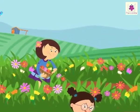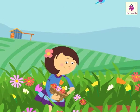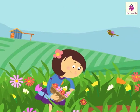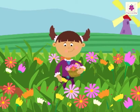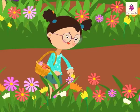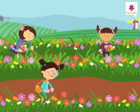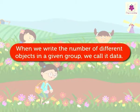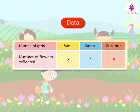Look at the flower farm. Simi collected five flowers, Sanya collected seven flowers, and Suzanne collected four flowers from the farm. When we write the number of different objects in a given group, we call it data. The data given in the flower farm example can be represented as follows.